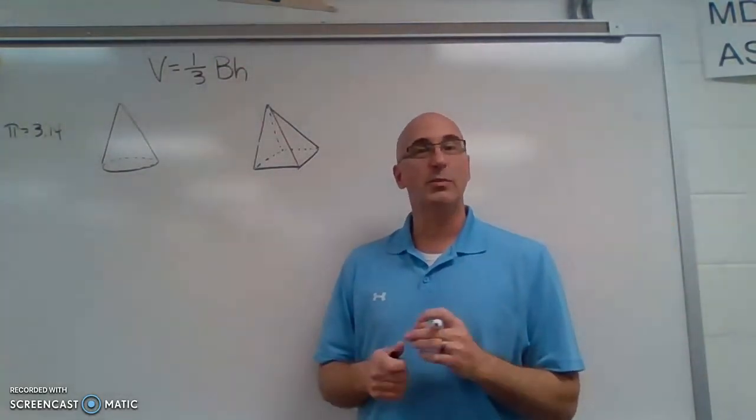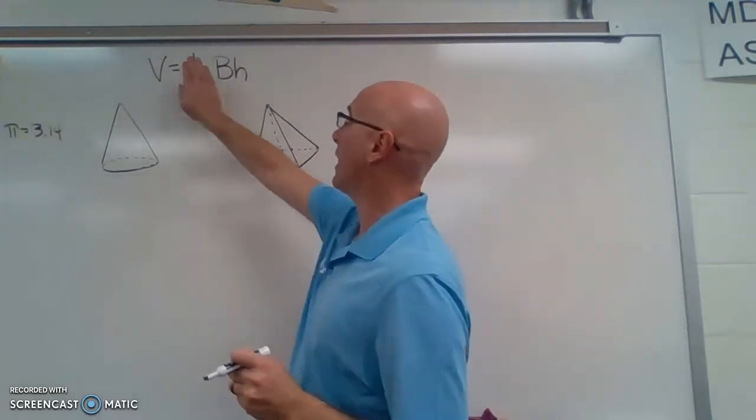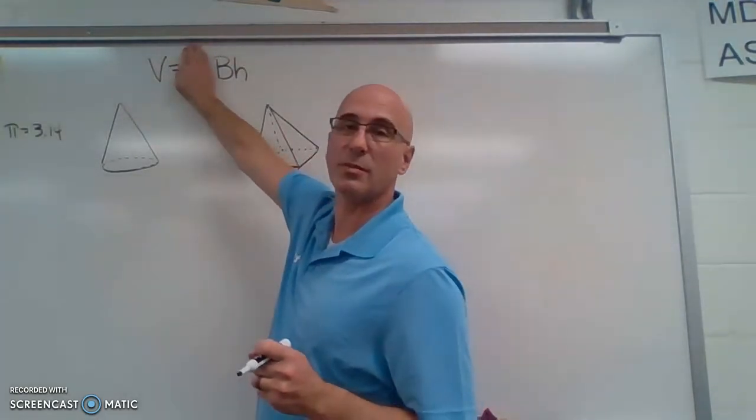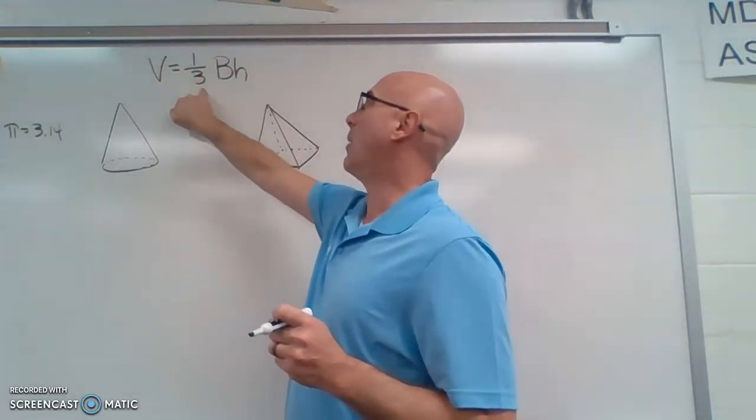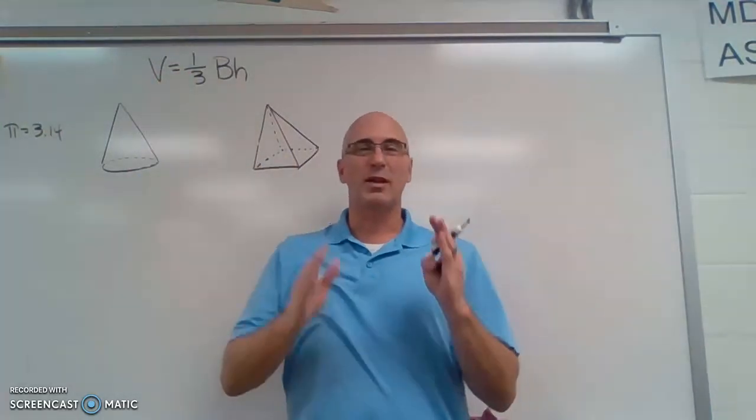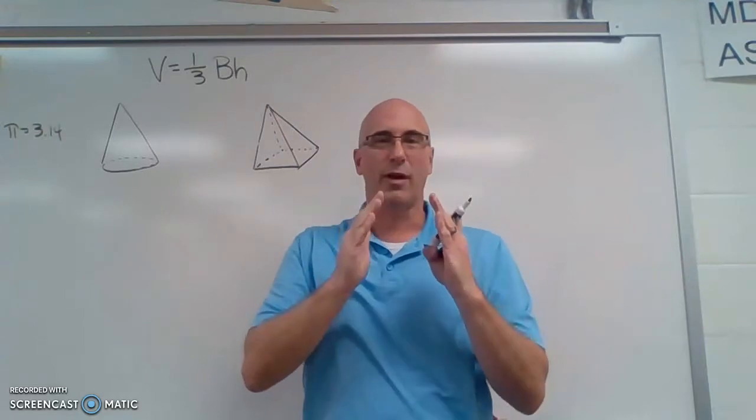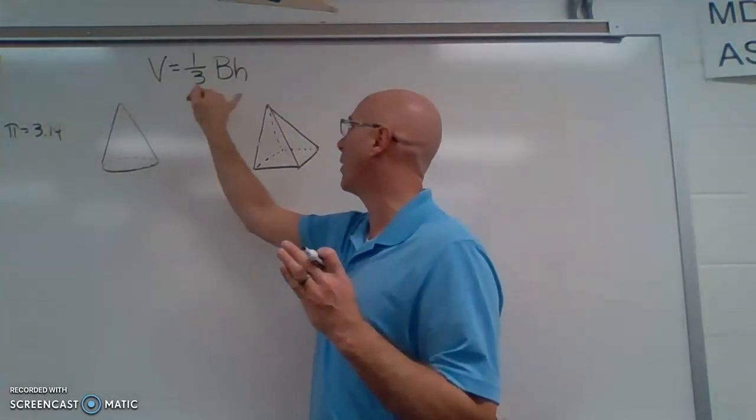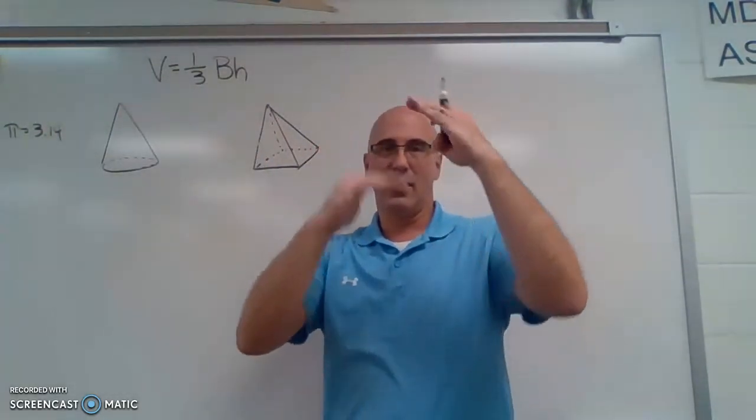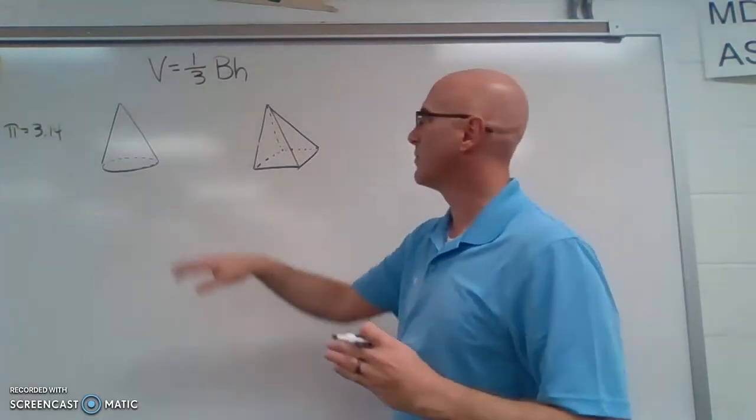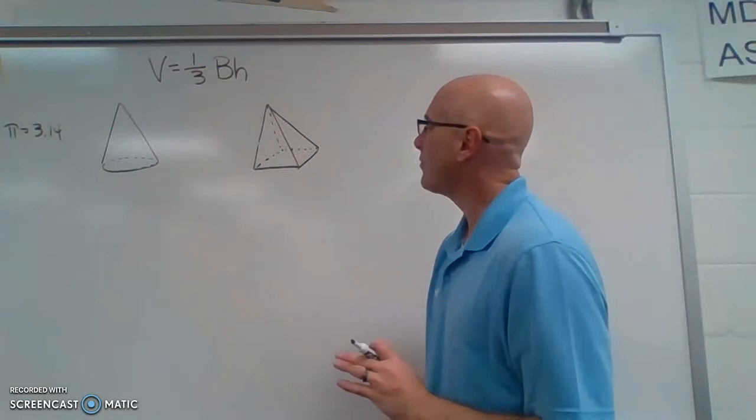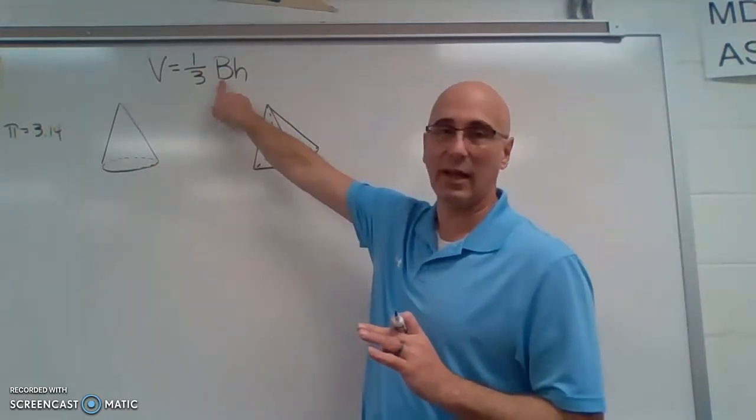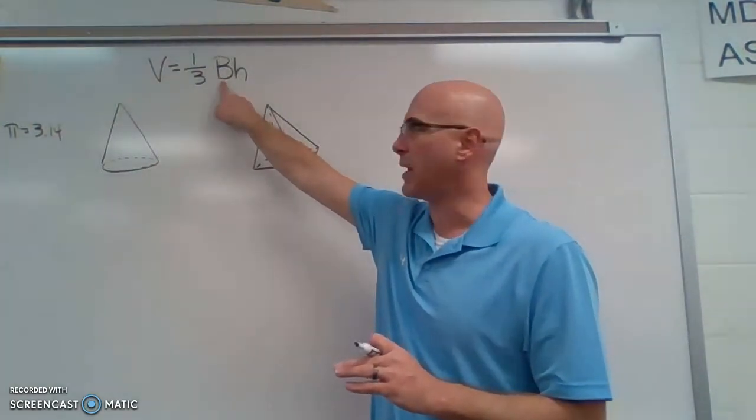Now it looks really similar to what we learned in our last lesson where the volume of a prism or a cylinder is base times height. But because some of that three-dimensional figure is chopped off when we bring it to a single point rather than having two bases, we have a third. I'm just going to leave it at that. So the capital B again means the area of our base.